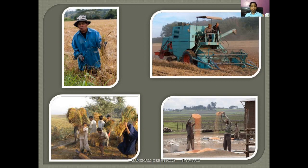As seen in the first picture, the farmer is cutting the crops with a sickle — this is harvesting. In the second picture, the farm is being harvested by a machine. The third picture shows threshing, where the harvested crops are smashed on the ground so that the grain seeds can be removed. The fourth picture also shows threshing, where farmers throw the grains from a height so the wind carries away the lighter chaff while the heavier grain seeds fall down.